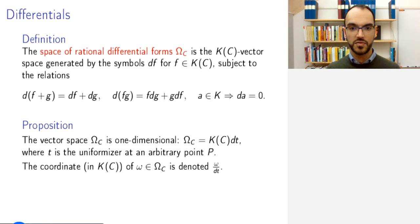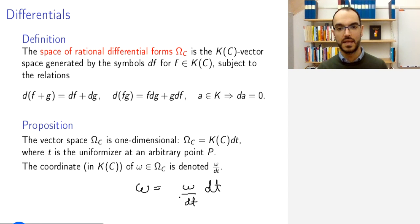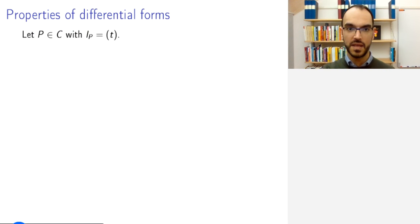And, in general, the coordinate of any element of ω_C will be denoted by ω/dt. So, this means that, since this is a one-dimensional space, I have a coordinate representation of this shape. And so, this is a function. Now I'm looking at a vector space over the field of rational functions.